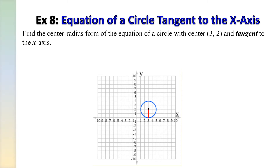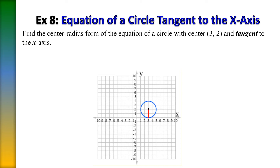In this example, we're finding the center-radius form of the equation of a circle with center (3, 2), tangent to the x-axis. We can see the circle tangent to the x-axis. All we need to do is identify the radius — we already have our center. To write an equation of a circle you need the center and the radius. Since it's tangent to the x-axis, the y-value is the radius. Moving from the origin over 3 and up 2, our y-value is 2, so our radius is 2.